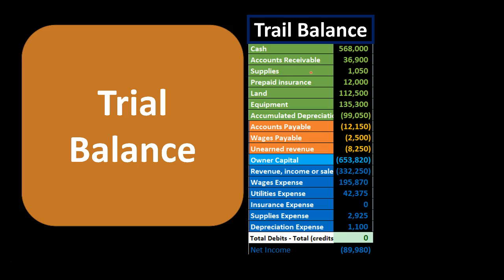The order of the trial balance will always be consistent — not alphabetical, but ordered by account type: asset accounts, then liability accounts, then equity accounts, then revenue accounts, then income statement accounts. This is shown here with assets in green, liabilities in orange, equity in light blue, and revenue and expenses in dark blue. This will not always be the case in every trial balance, but it will always be in that order.